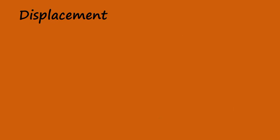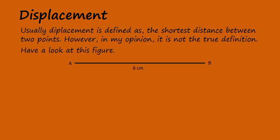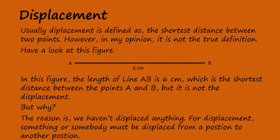Displacement. Usually, displacement is defined as the shortest distance between two points. However, in my opinion, it is not the true definition. Have a look at this figure. In this figure, the length of line AB is 6 cm, which is the shortest distance between points A and B. But it is not the displacement. The reason is we haven't displaced anything. For displacement, something or somebody must be displaced from one position to another position.